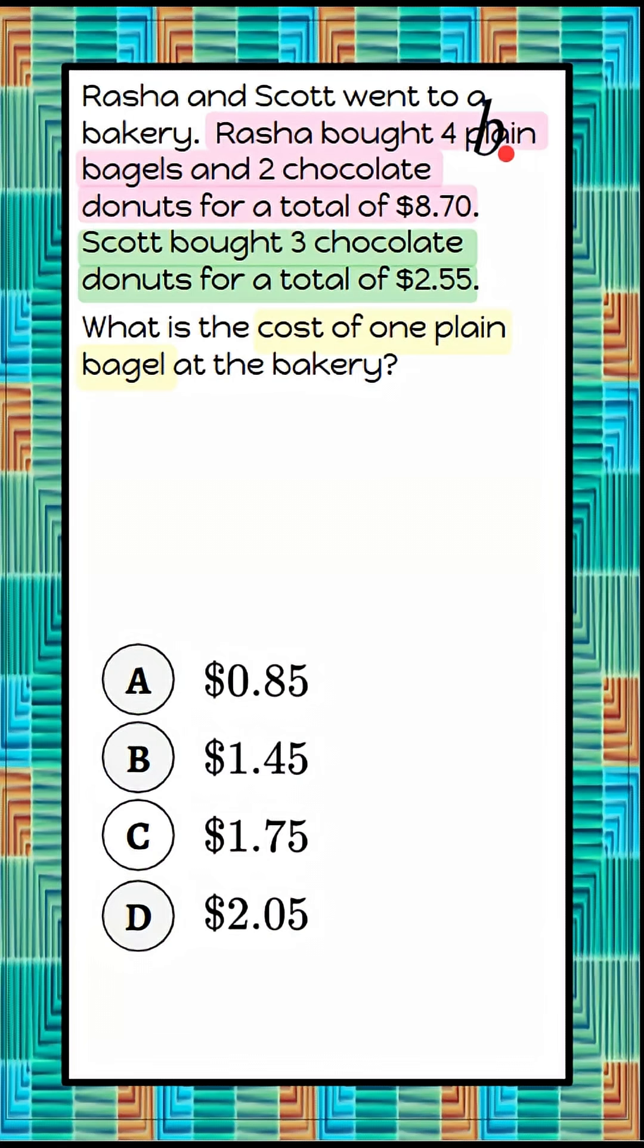What I don't know is the cost of a bagel. I know that Rasha bought four of them, but I don't know how much one bagel costs. So I'm going to let B equal the cost of one bagel. And I'm going to let D equal the cost of one donut.